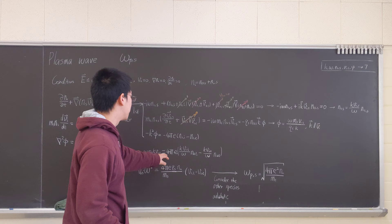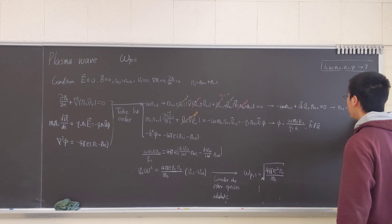And equals to 4 pi. And then N1. N1 can be expressed in terms of this. Let's put this here. So here for ion, electron.